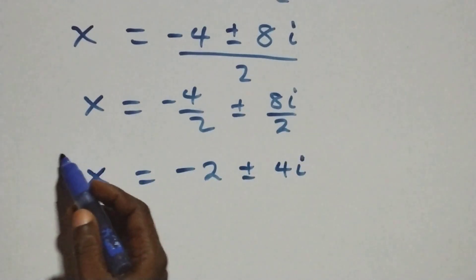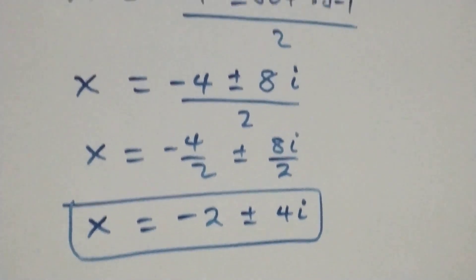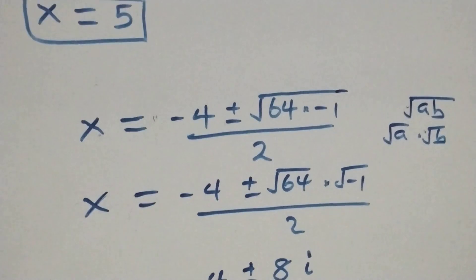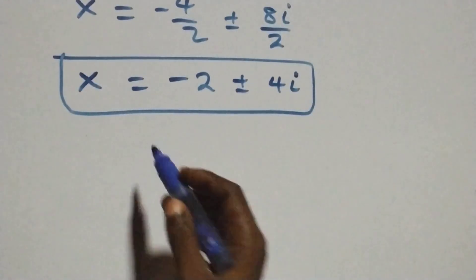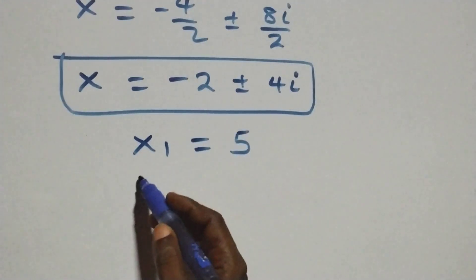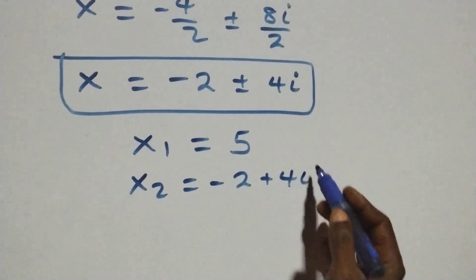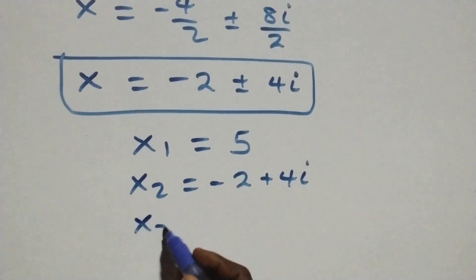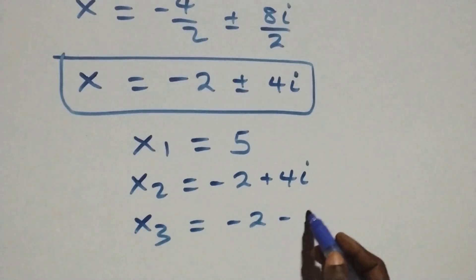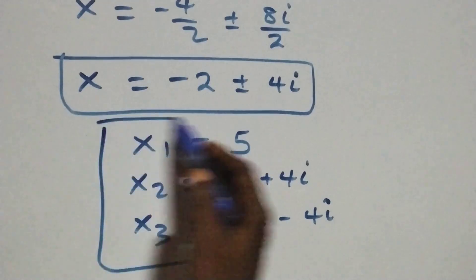This gives two complex solutions. Making three solutions together — one real and two complex — we have: x₁ equals 5, x₂ equals minus 2 plus 4i, and x₃ equals minus 2 minus 4i. One real solution and two complex solutions.